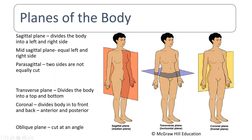The coronal plane divides the body into front and back — that is, anterior and posterior. The oblique plane means a cut at an angle. If you cut at an angle like this, then it's called the oblique plane. So to recap: sagittal plane divides into left and right; transverse plane divides into top and bottom; coronal plane divides into front and back; oblique plane cuts at an angle.